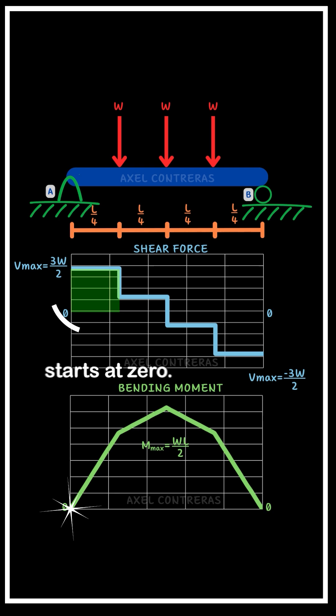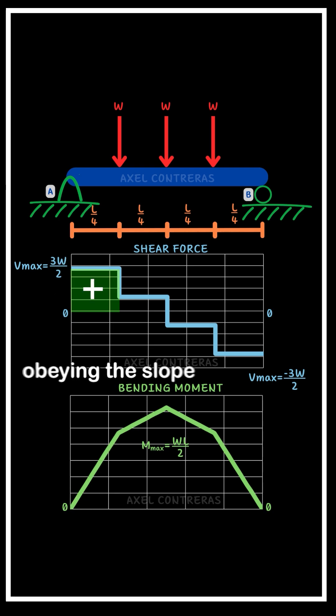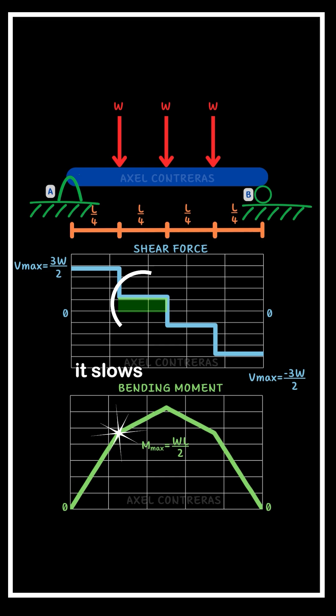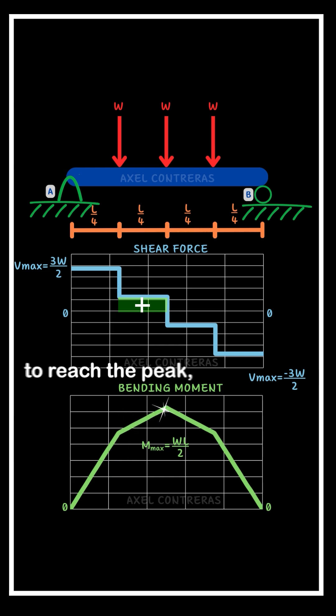The bending moment again starts at zero, rising swiftly, obeying the slope dictated by the first shear jump. At the first load, it slows, still climbing, but as if it's struggling to reach the peak.